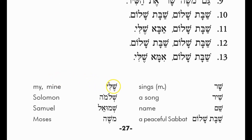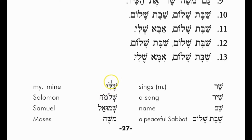Sheli means 'my' or 'mine.' It comes from Shel-ani — 'of me' — and Sheli is a contraction. Shlomo is the Hebrew name Solomon; Shmuel is Samuel; and Moshe is Moses.